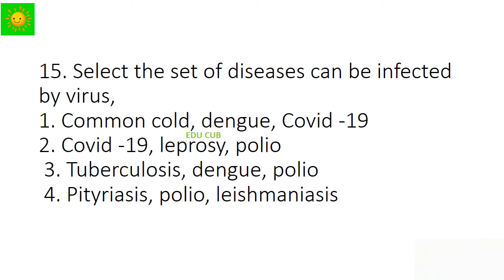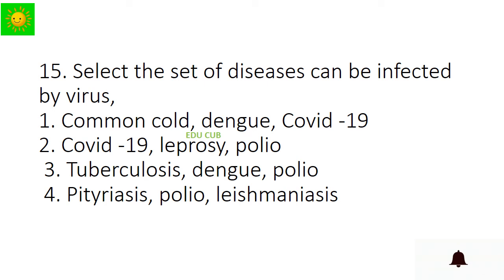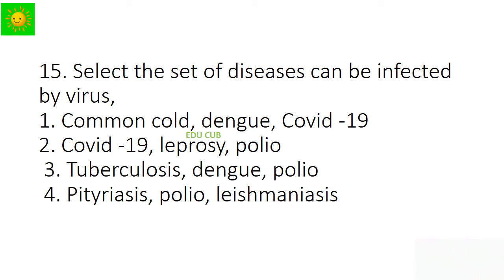Question 15: Select the set of diseases that can be infected by a virus. Options: common cold, dengue, COVID-19; COVID-19, leprosy, polio; tuberculosis, dengue, and polio; or vitriosis, polio, leishmaniasis. The answer is common cold, dengue, and COVID-19.